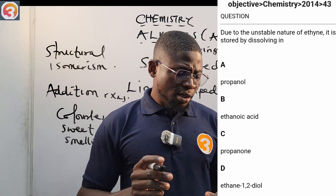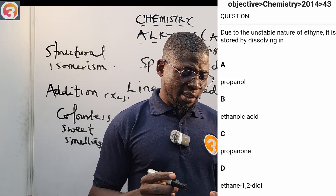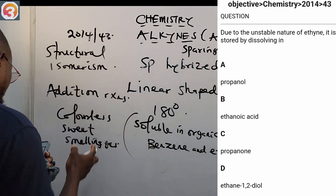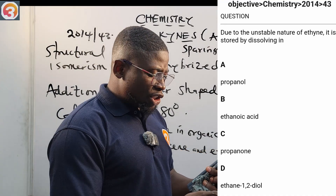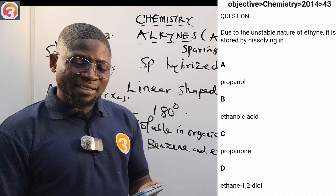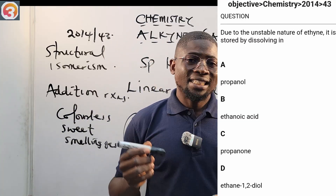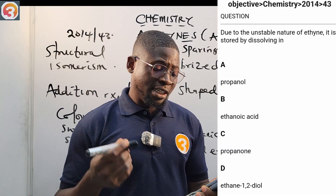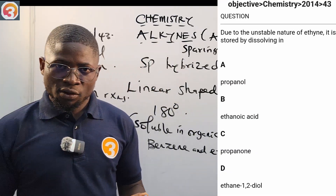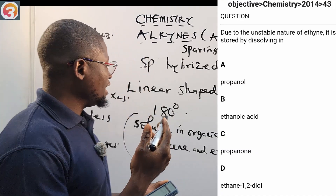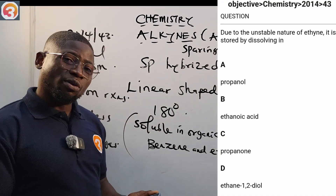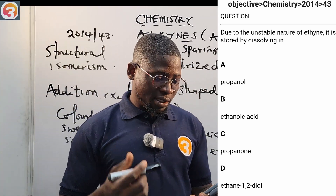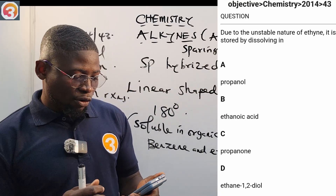Here is another question: due to the unstable nature of ethyne, it is stored by dissolving in — A: propanol, B: ethanoic acid, C: propanone, D: ethane-1,2-diol. As we stated, ethyne is stored in steel cylinders in solution in propanone. So the correct answer is option C.